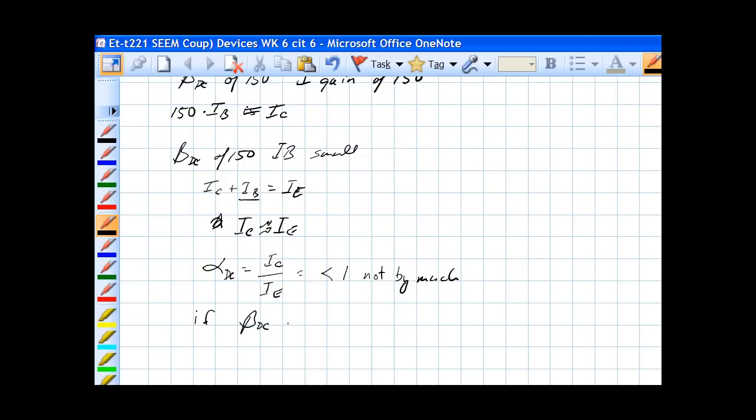If beta DC is 30, then we have to pay attention to alpha DC.